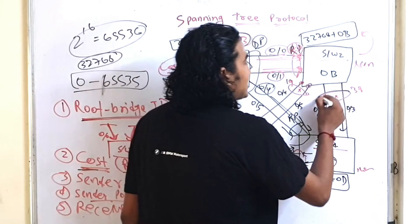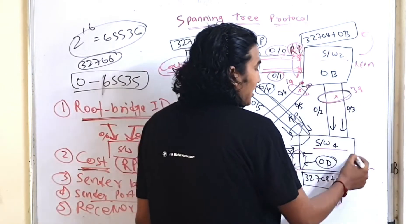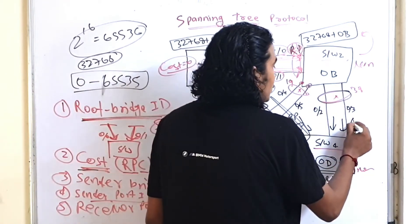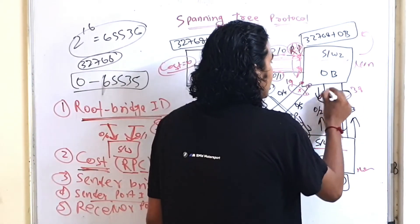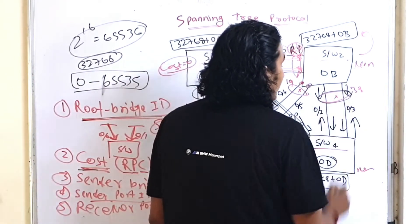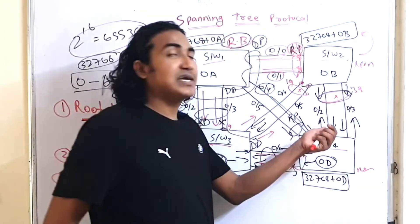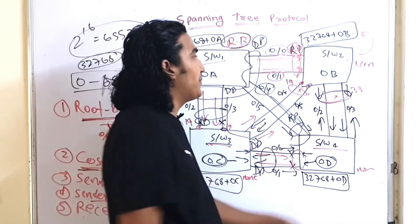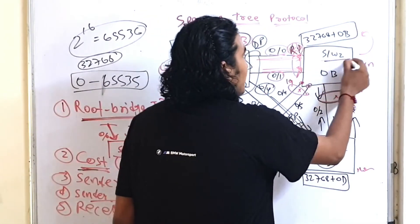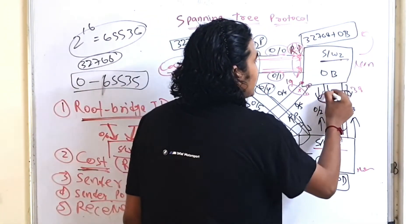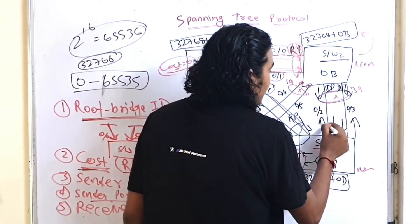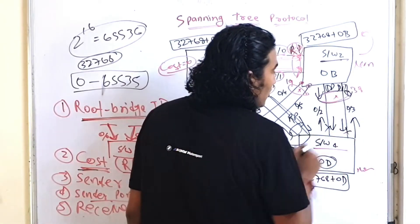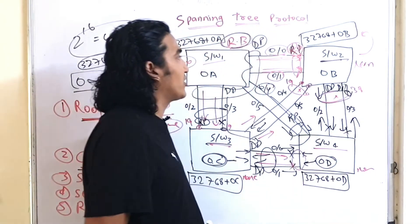On the link between Switch 2 and Switch 4, both switches send BPDUs. Switch 2 is sending the superior BPDU. So Switch 2's port becomes DP and Switch 4's port becomes alternate.